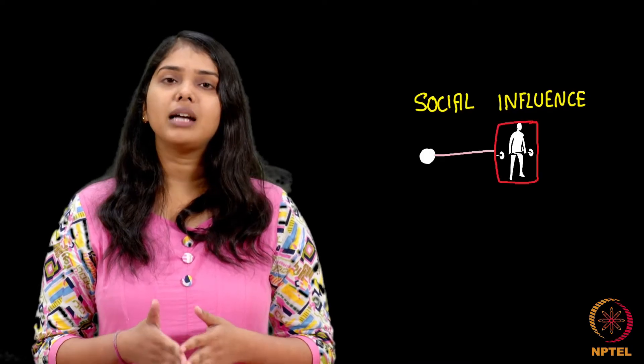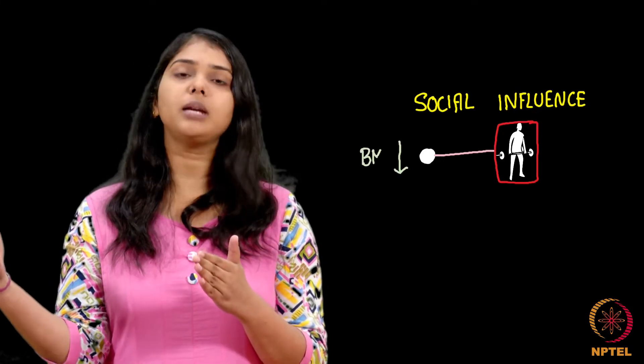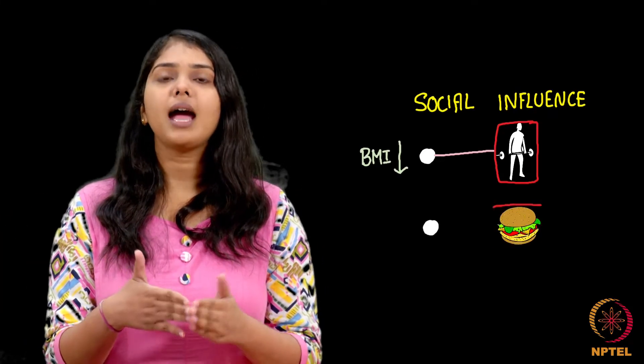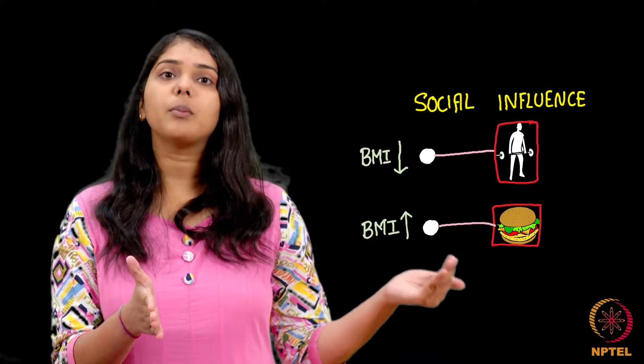Finally, we have implemented homophily and seen how to implement three kinds of closures in our evolutionary model. The last and most interesting thing remaining is social influence, and it is actually the easiest — we need not do anything extra in this model to achieve it. There is a very subtle way in which we capture social influence: if a person is connected to a gym, that should result in a decrease in his BMI, and if a person is connected to an eat-out place, this should result in an increase in BMI.